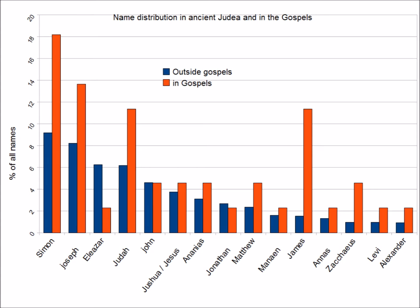So the onomastic argument goes that the distribution of names in the Gospels matches the distribution we know from the population in Judea at the same time. This is not what we would expect from fiction, but it is what we would expect from history. Ergo, most of the names used in the Gospels refer to real people. This is the strongest part of the argument, and by the standards of the mythicism versus historicity debate the statement has significant rigour.